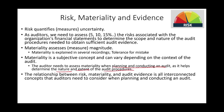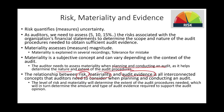The relationship between risk, materiality, and audit evidence is all interconnected. The auditor will need to take into account risk and materiality in order to determine the evidence — how much to collect and what type. This determines the amount and type of audit evidence required to support the audit opinion, which is why they are all interrelated. I'm going to explain using a simple example first, then use a financial statement example to illustrate these concepts.